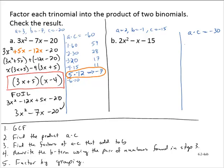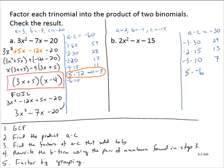Let's list some factors of 30: negative 1 and 30, negative 2 and 15, negative 3 and 10, and negative 5 and 6. Finding sums: negative 1 plus 30 is 29, negative 2 plus 15 is 13, negative 3 plus 10 is 7, and negative 5 plus 6 is 1. I wanted negative 1, so let me change the signs. 5 times negative 6 is negative 30, and 5 plus negative 6 is negative 1. That's the pairing I want.